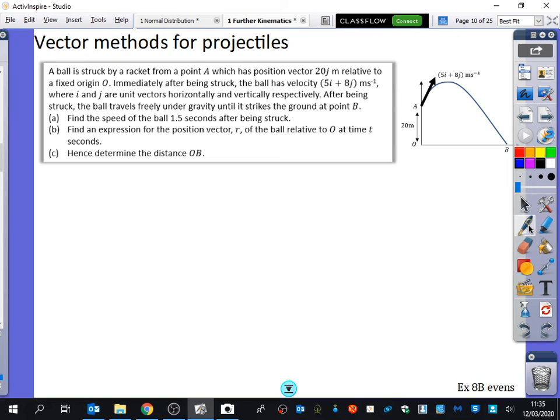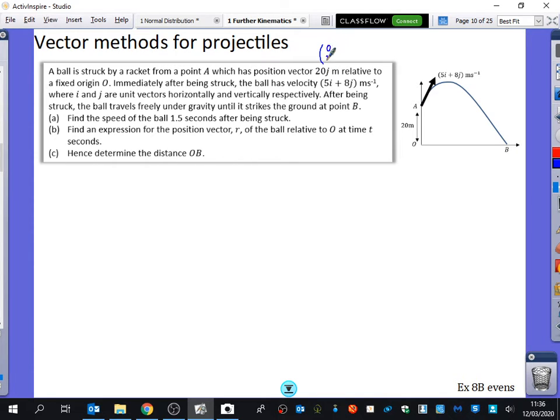We're just going to look at what you can do for projectiles using vectors. It's a good recap of revising some of these things. The ball is struck by a racket from a point A, which has position vector 20j. So immediately, I'm just going to write that out as (0, 20).